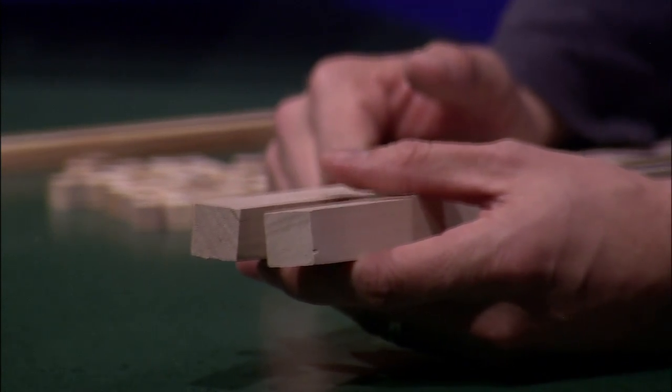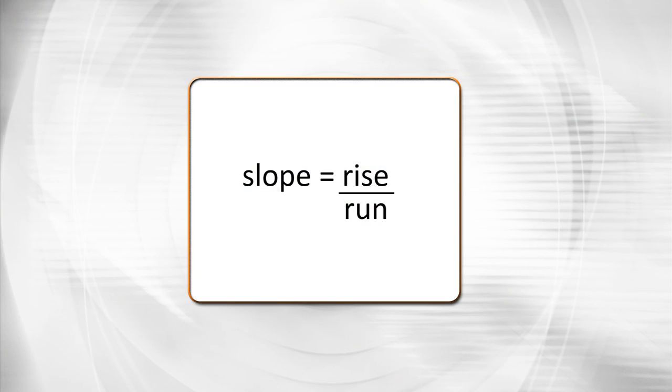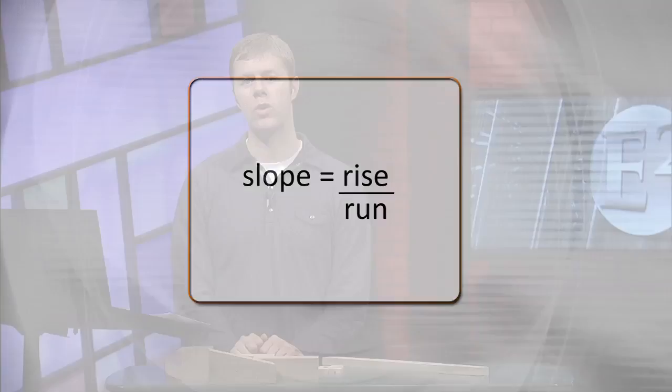Slope — what does that mean? Slope is like how hilly something is. If you've ever been on a big mountain, you'd say that has a large slope. If you've been on a flat plain or on your floor, it has a very, very small slope. And when we talk about slope, the equation for it is: slope is equal to the rise over the run. It's a fraction — how high something goes up to how far something travels.